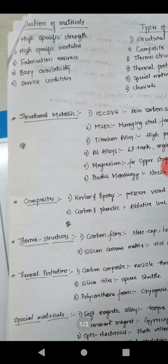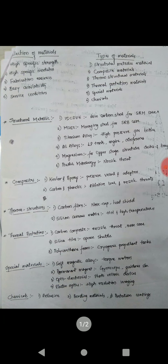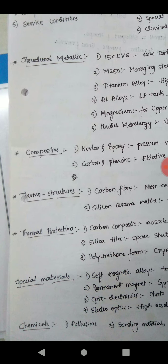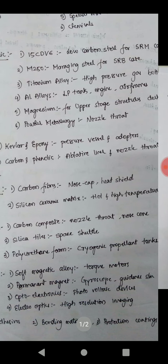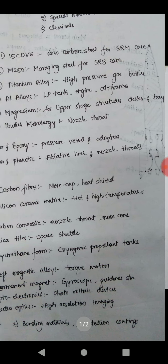Composites include Kevlar and epoxy for pressure vessels and adapters, and carbon and phenolic for ablative liners and nozzle throats. Examples of thermostructures are carbon fibers used for nose caps and heat shields, and silicon ceramic matrix used for high temperatures.